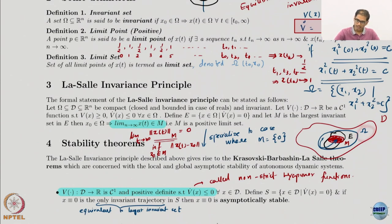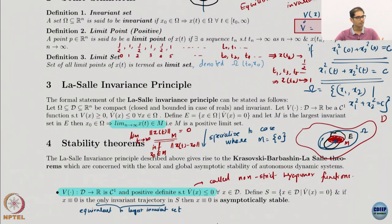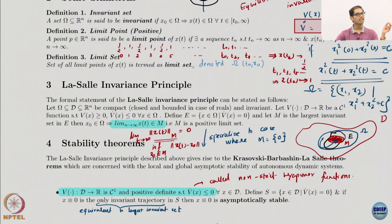Once you have this set omega, the set E is then constructed by taking the set where V dot equals zero — the set of states where V dot is exactly equal to zero. Obviously V dot is less than or equal to zero, so equal to zero is also part of the omega set. Therefore the set E is completely inside the omega set. Once we have the set E, we construct what is called the largest invariant set inside E — this is the set M. The claim of the theorem is that if you start your initial conditions inside the omega set, you are guaranteed to converge to the set M, which is the largest invariant set.